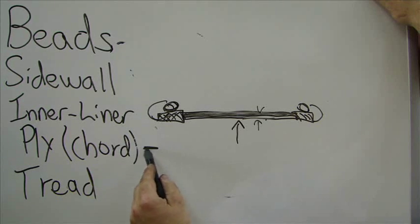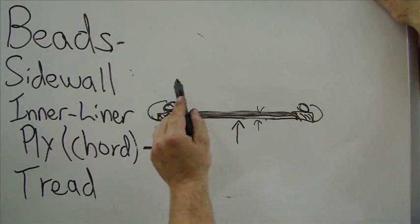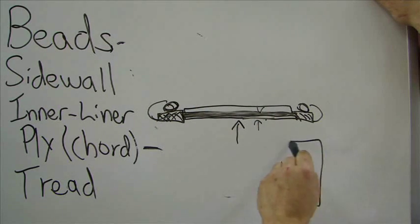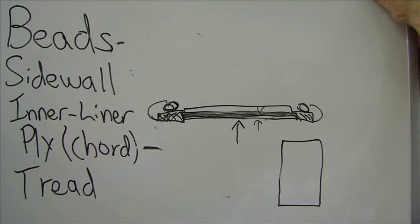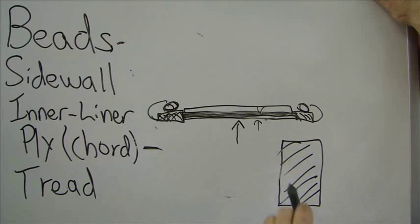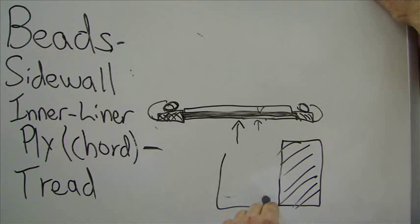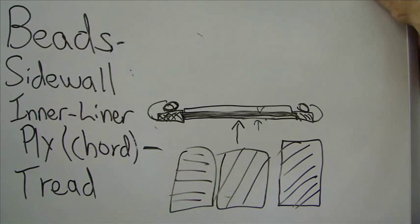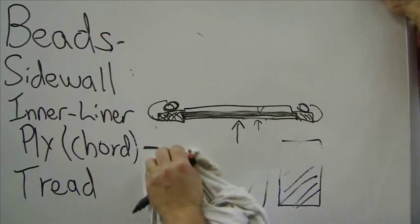On top of that goes the ply, which is the cord. Now, the ply is going to be one layer. And if you were to look at the ply, if you were to look at the lines and how the cord goes through the ply, it usually goes on an angle, like this. Sometimes the ply can have a real steep angle. Sometimes it can be straight across, depending on how the tire is designed. But the ply is what gives it strength.